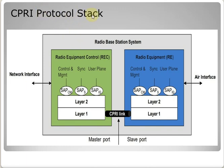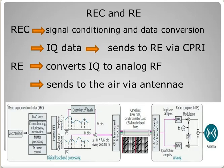CPRI is a high-speed serial communication protocol for transferring digitized radio data and control information between the BBU and RRU. Speaking of the protocol stack, we have the REC (radio equipment controller) and RE (radio equipment). CPRI specifications define the layer 1 and layer 2 requirements. Once the physical link is established, different information flows have access to layer 2 via service access points. The flows of information are: first, C&M (control and management), used to monitor and control REs; then synchronization data, used for frame and time alignment; and finally, the user plane, which carries IQ — digitized data samples. The REC's responsibility is signal conditioning and conversion of data into IQ data, which it sends to the RE via CPRI.